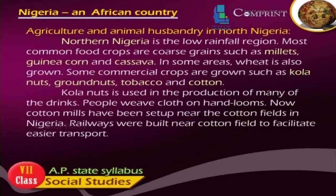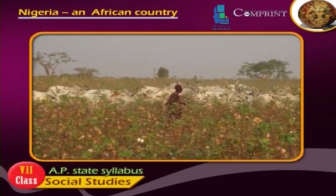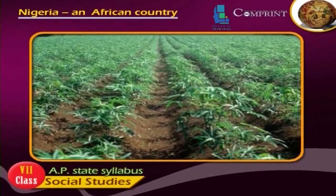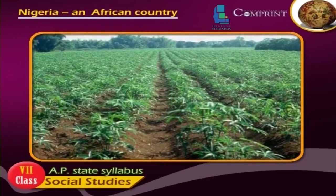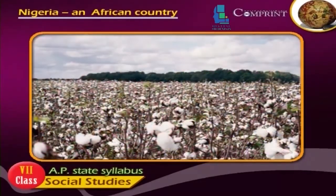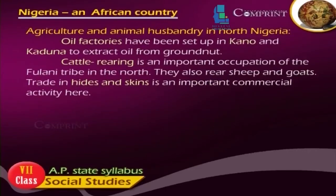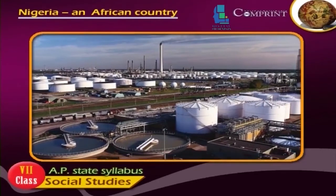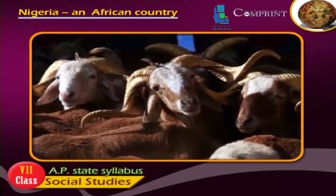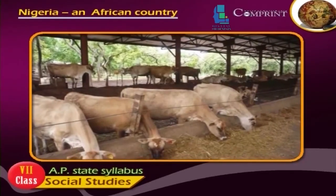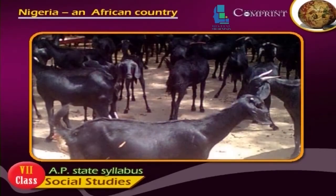Agriculture and Animal Husbandry in North Nigeria. Northern Nigeria is a low rainfall region. The most common food crops are coarse grains such as millet, guinea corn and cassava. In some areas, wheat is also grown. Some commercial crops grown include cola nuts, groundnuts, tobacco and cotton. Cola nuts are used in the production of many drinks. People weave cloth on handlooms, and cotton mills have been set up near the cotton fields. Railways were built near cotton fields to facilitate easier transport. Oil factories have been set up in Kano and Kaduna to extract oil from groundnuts. Cattle rearing is an important occupation of the Fulani tribes in the North. They also rear sheep and goats, and trade in hides and skins is an important commercial activity.